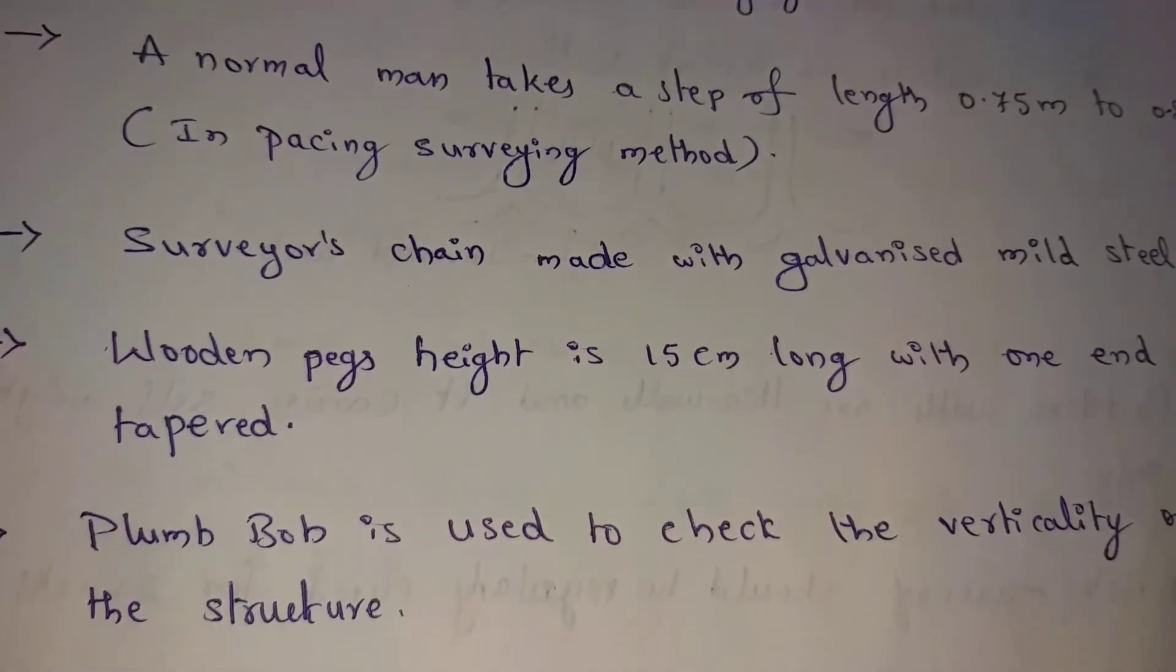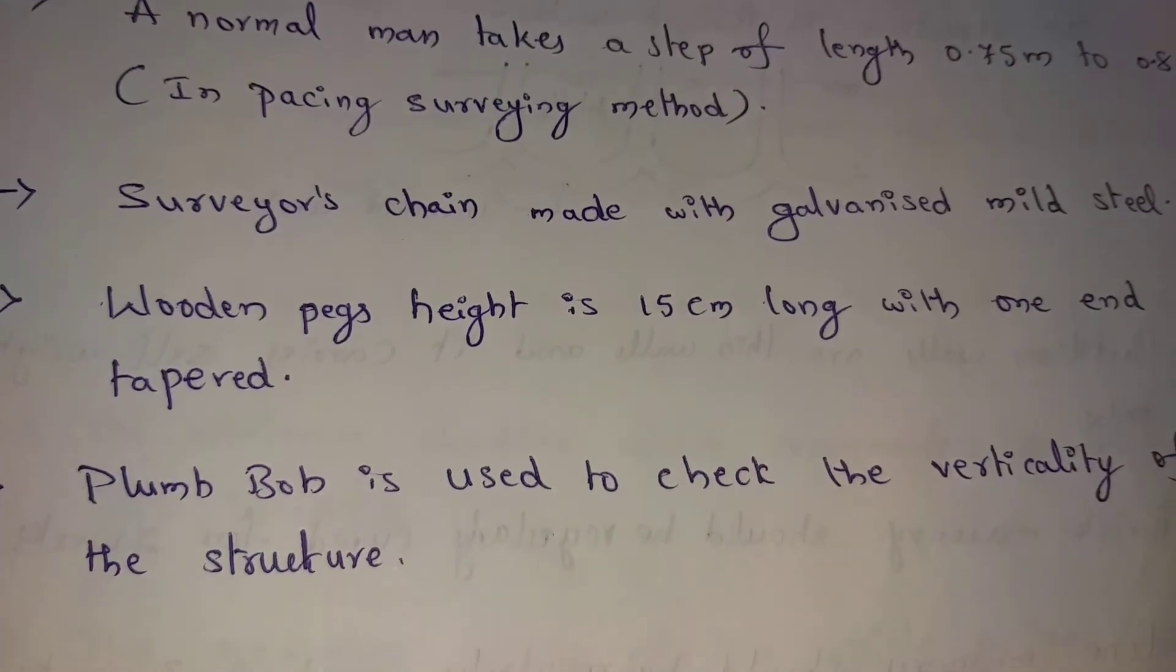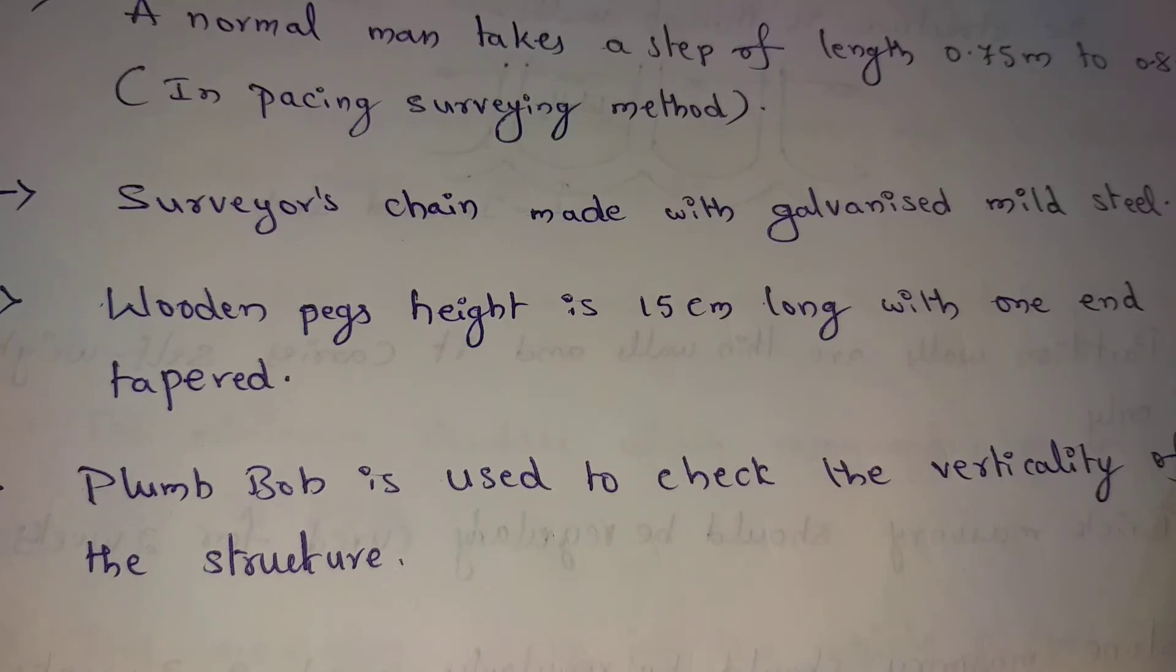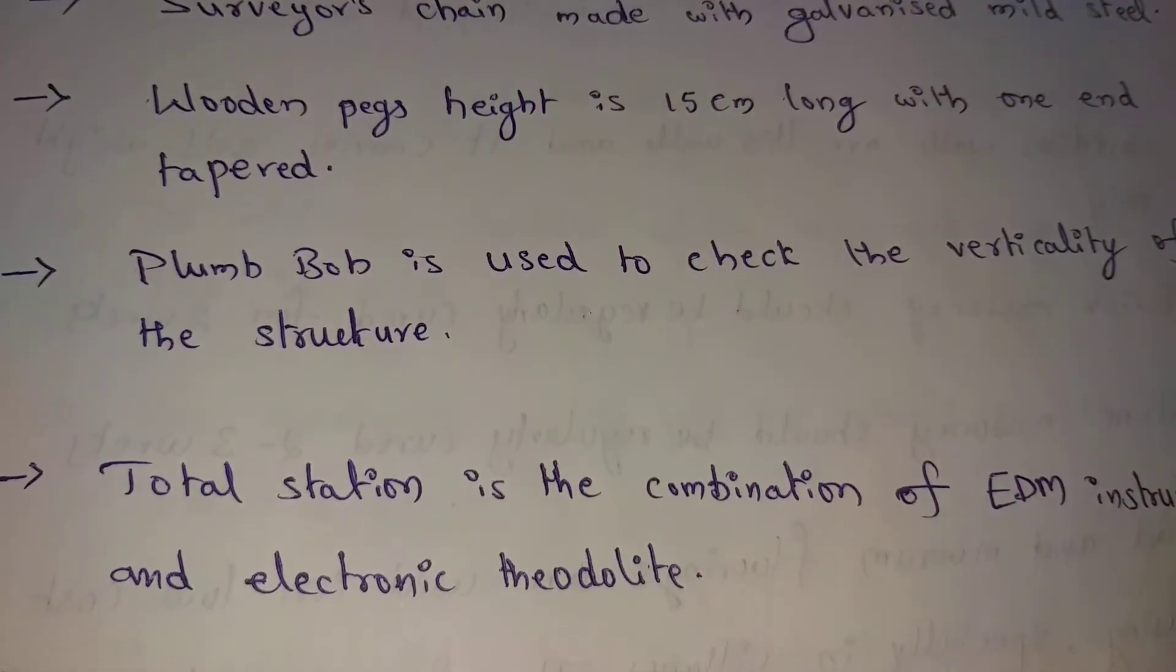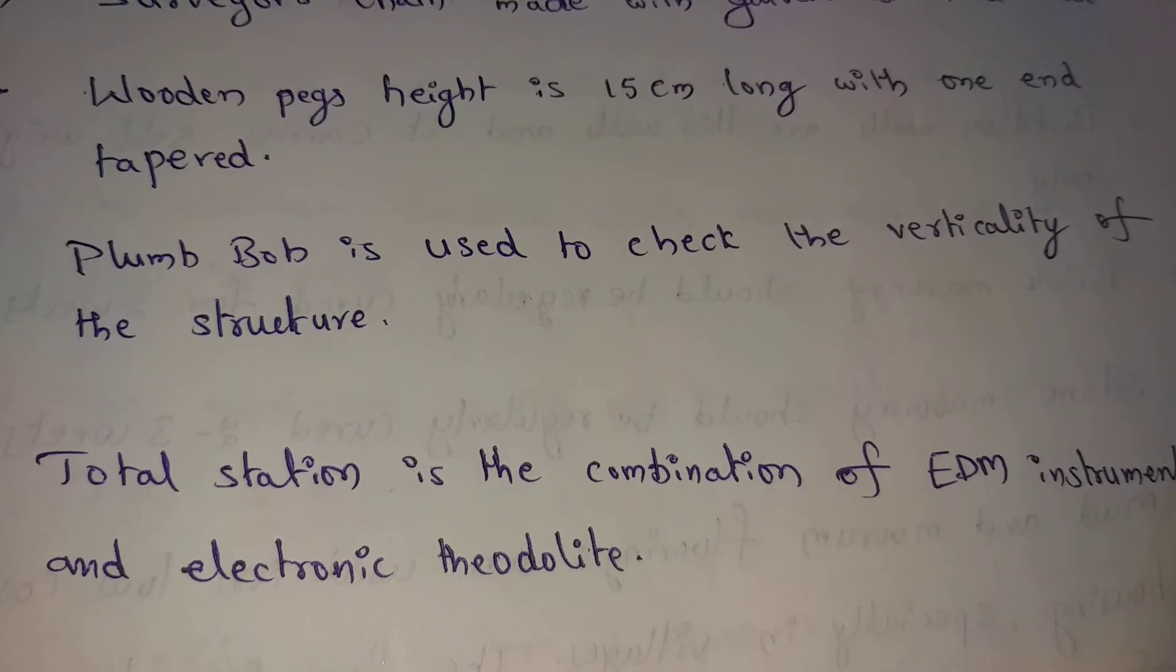Plumb bob is used to check the verticality of a structure. From the foundation to the slab work, we will use every structure plumb bob. Columns are vertical, then plumb bob. Pedestal vertical, then plumb bob. Walls, we will use the plumb bob.